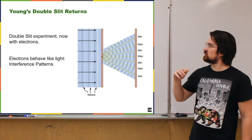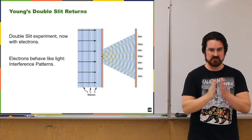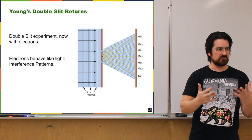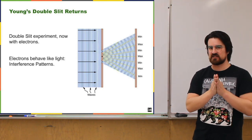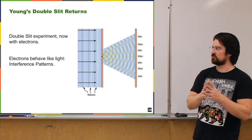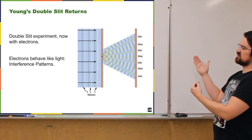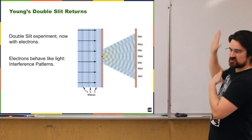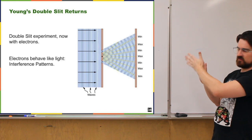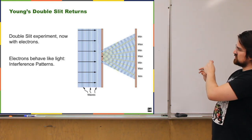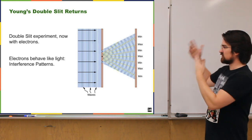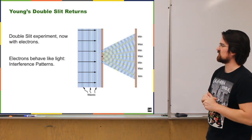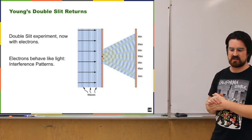Going back to the double-slit experiment: when we studied interference of light, the fact that light produced interference patterns was a dead giveaway that light was wave-like. It wasn't until later that this experiment could be done with electrons. Set up slits, have an electron beam fire at those slits, with a screen on the other side where electrons produce a visible indication when they land. And indeed, you get an interference pattern — just like with light. It's more condensed because the wavelength of electrons is much smaller than visible light, but it's still an interference pattern.